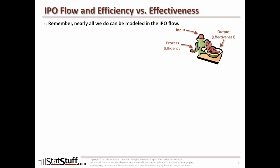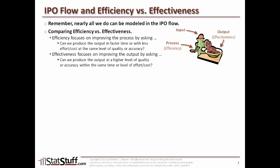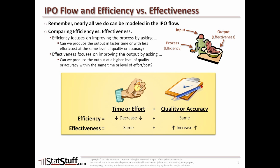As we compare again efficiency versus effectiveness based off of this IPO flow model, efficiency focuses on improving the process piece. The question from an efficiency standpoint is: can we produce the output in a faster time or with less effort or less cost using the same level of quality or accuracy? From an effectiveness standpoint, the question would be: can we produce that output at a higher level of quality or accuracy within the same amount of time, effort, or cost — in other words, the same level of efficiency?